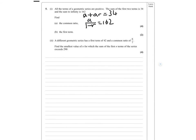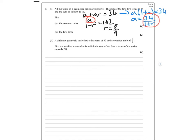I'm going to rearrange: A(1 + R) equals 34, so A equals 34 over (1 + R). I substitute this into the sum-to-infinity equation and solve for R. Working it through, R equals 8 ninths.